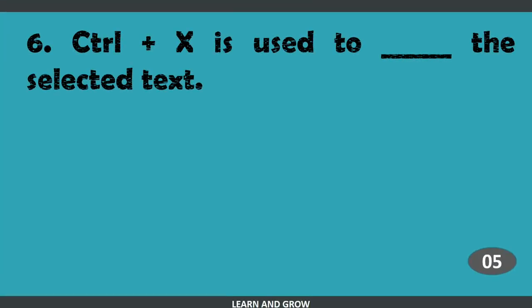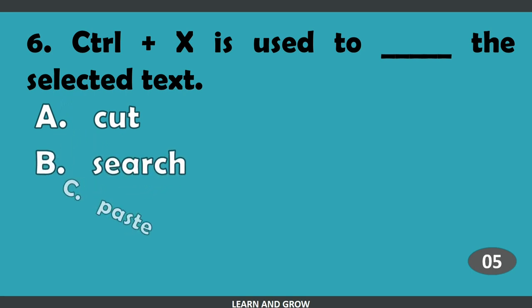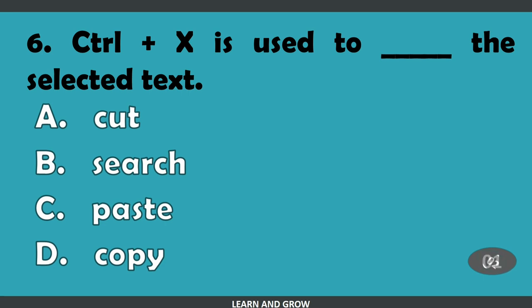Control plus X is used to blank the selected text. Option A: cut, B: search, C: paste, or D: copy. The right answer is option A, cut.